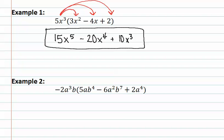Let's look at example two, where we will once again distribute a monomial through a trinomial. We will start by distributing the first. We have negative 2 times 5, which gives us negative 10. We then have three a's and then one additional a, which gives us a to the fourth. The b's add to create b to the fifth.